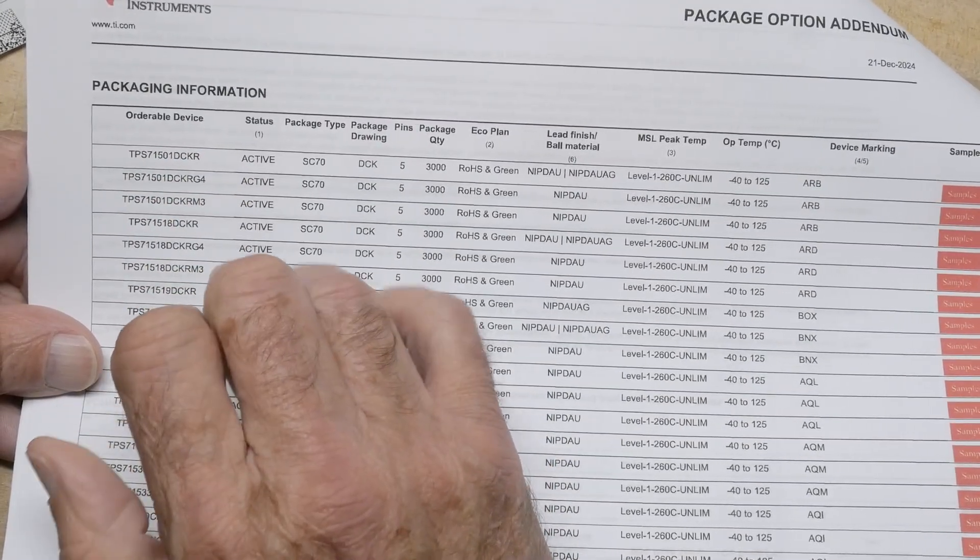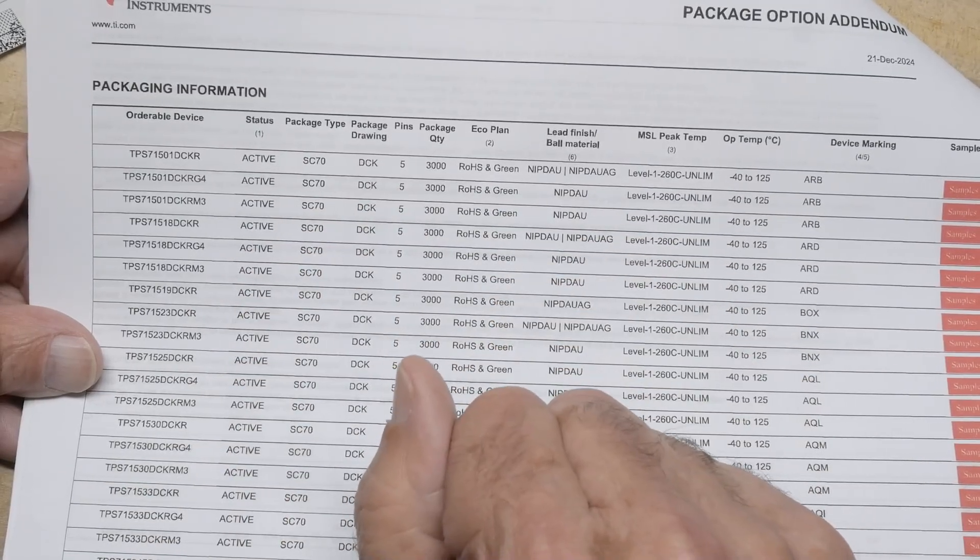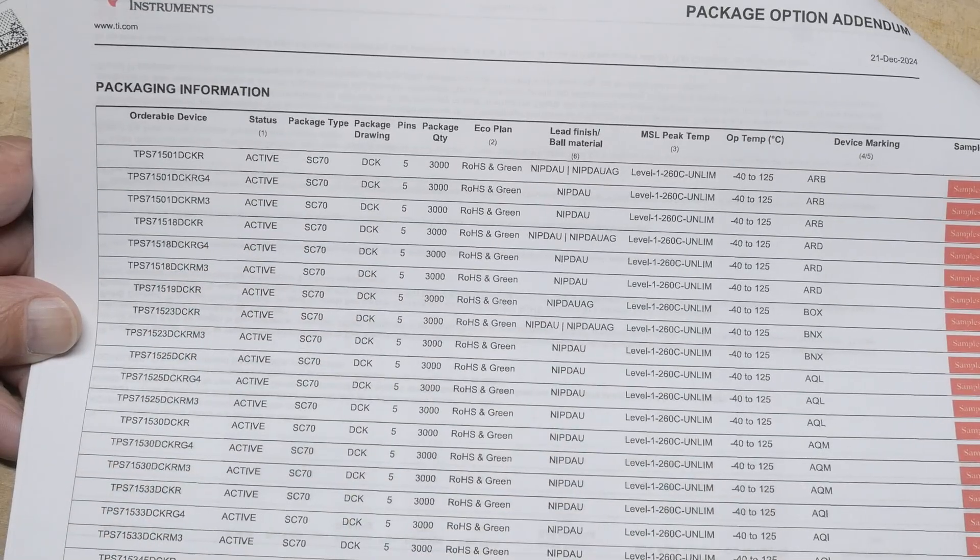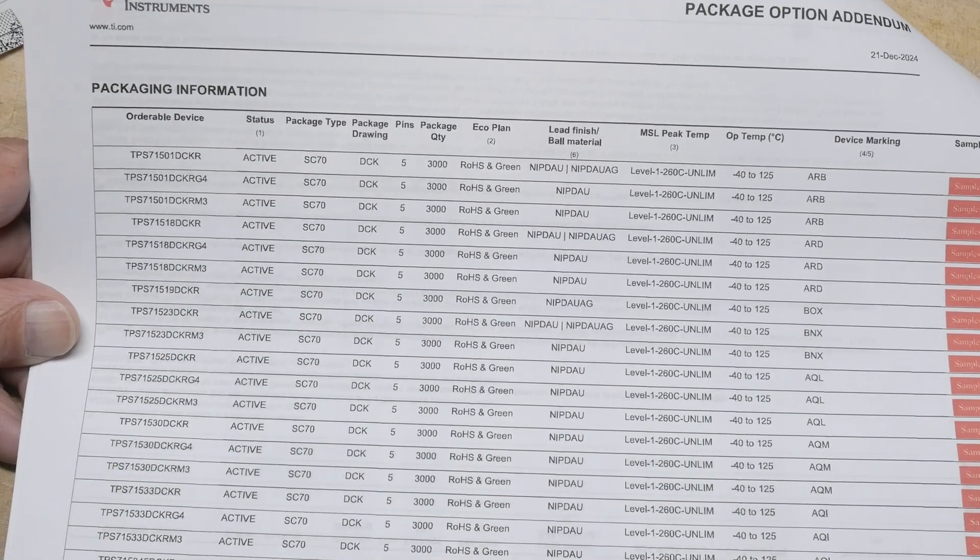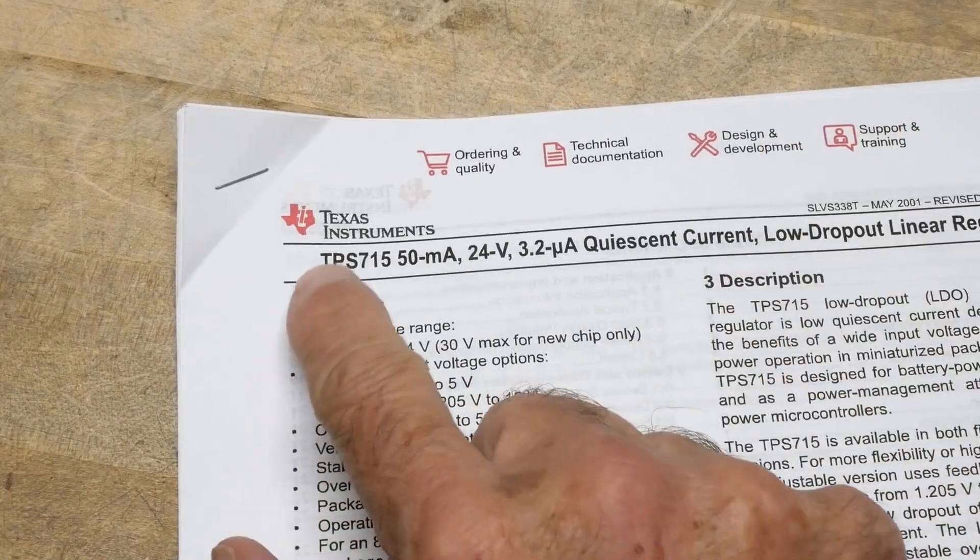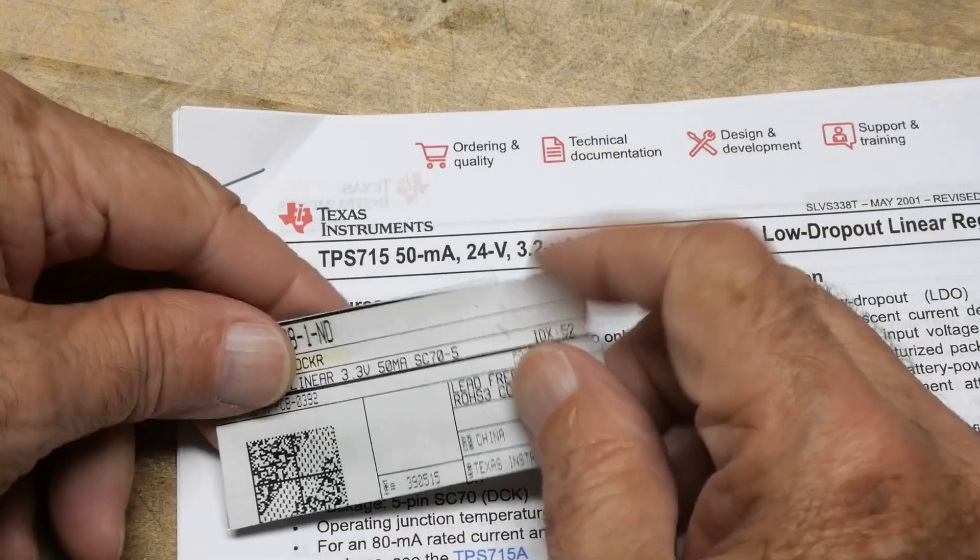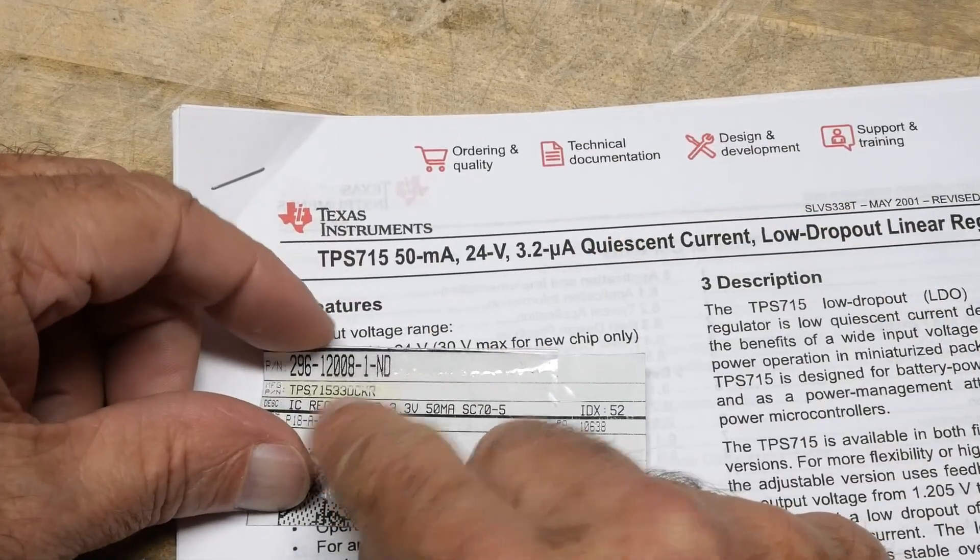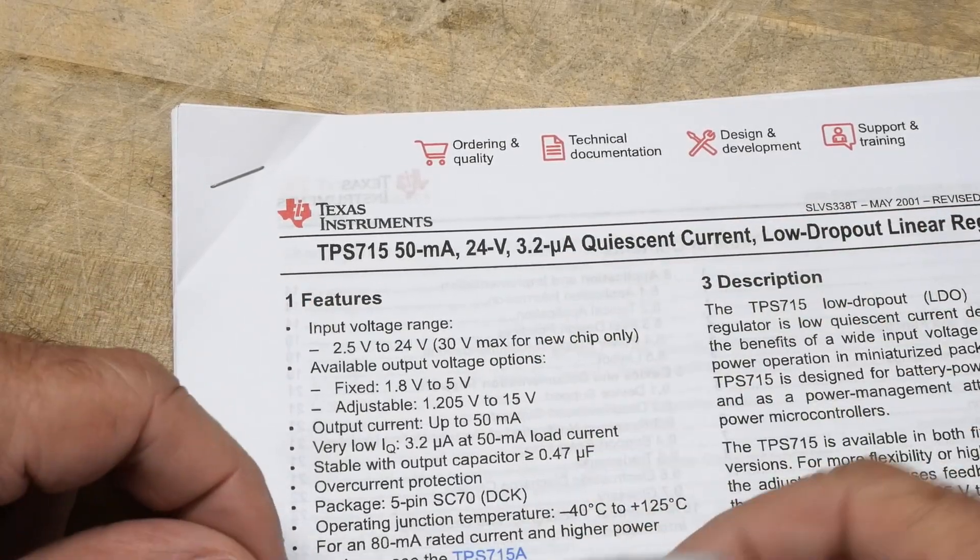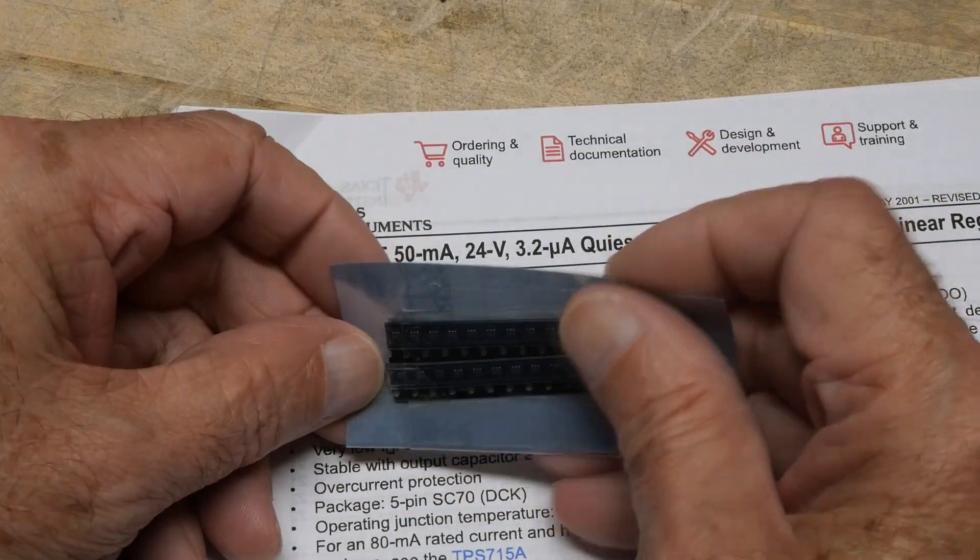Blah, blah, blah, blah. Anyway, there you go. Other ones have different watts. I don't know. All right. Well, that was chip of the day. A TPS 715 and in particular the 715 3.3, which is a 3.3 version of this. Yeah, these are nice little parts, although they have very, very small packages.